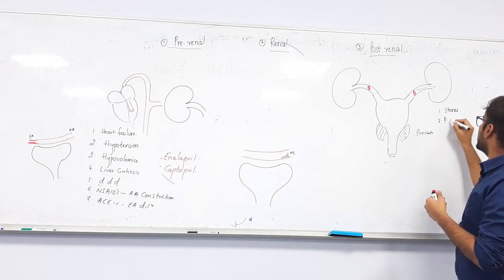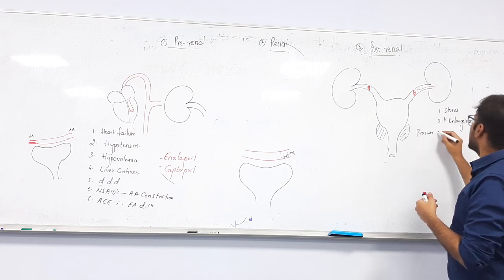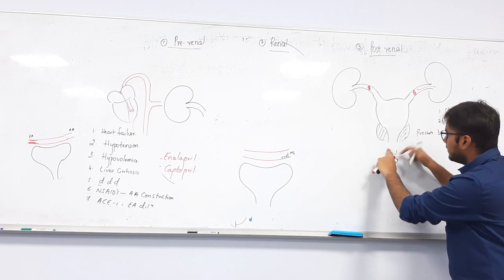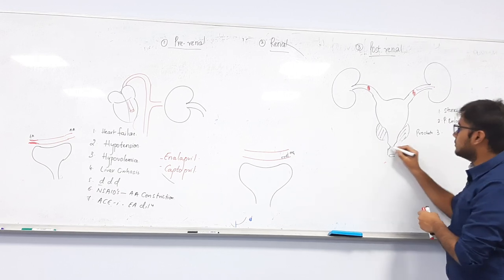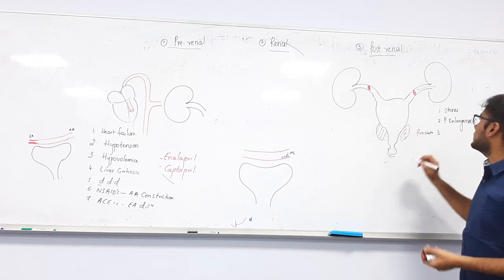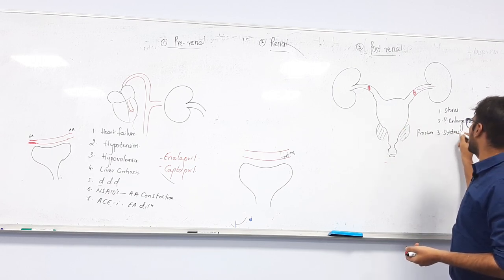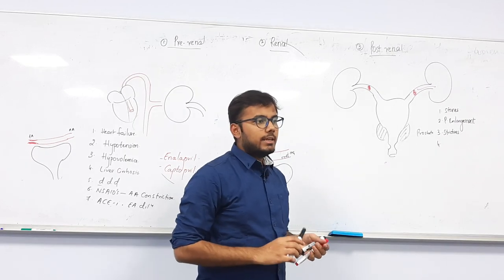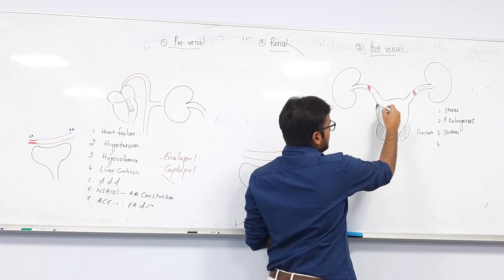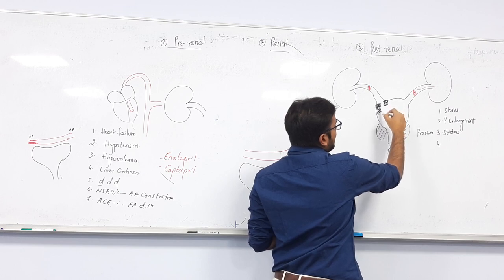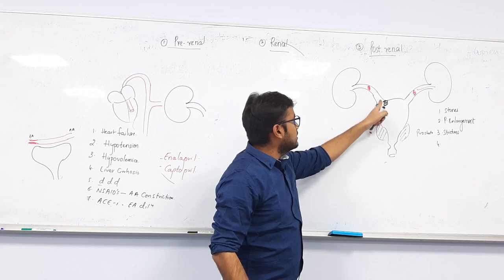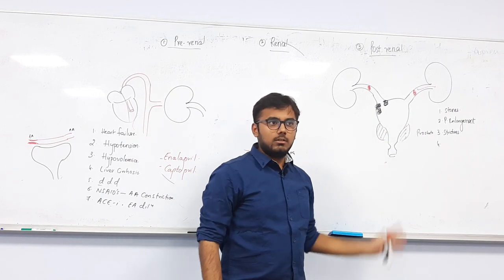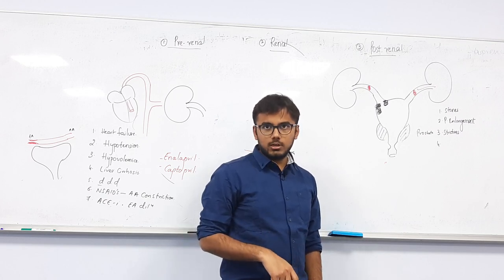Third post-renal cause is strictures — narrowing of the urethra reduces urinary output, urine backs up and damages the kidneys. Fourth, if there is cancer in the bladder, as the cancer grows the lumen becomes narrow, urine cannot come out, and bladder cancer also causes renal failure. These are the causes of post-renal failure.